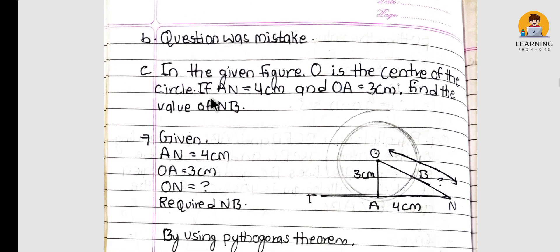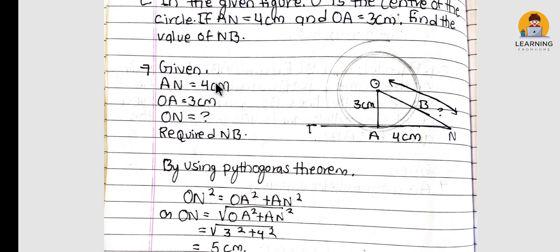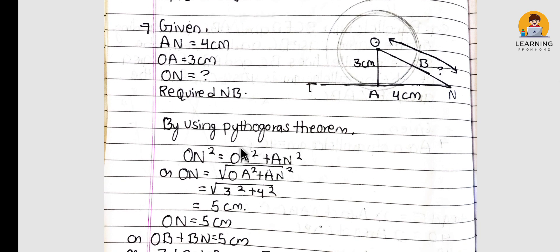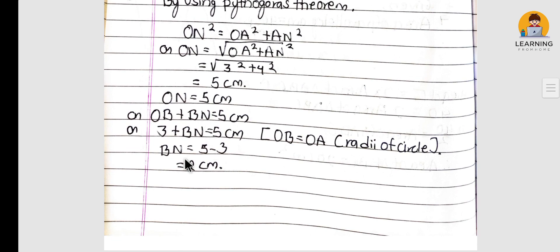In the given figure, O is the center of the circle. If AN = 4 cm and OA = 3 cm, find the value of NB. We know AN = 4 cm and OA = 3 cm. First, using the Pythagorean theorem, we find ON. Then using ON, we find BN. The value of BN is 2 cm.